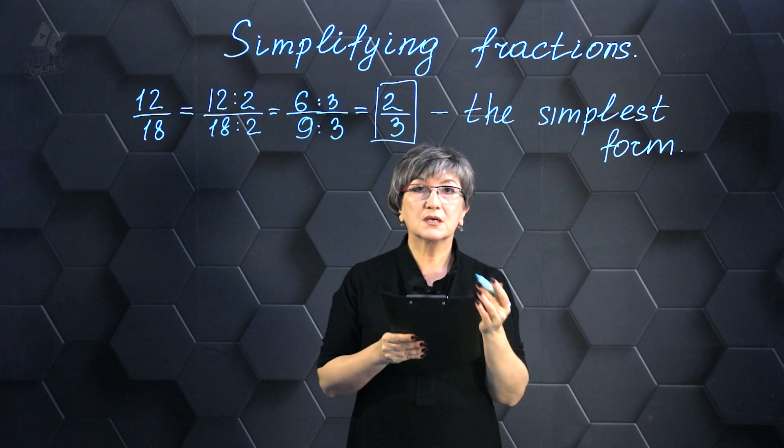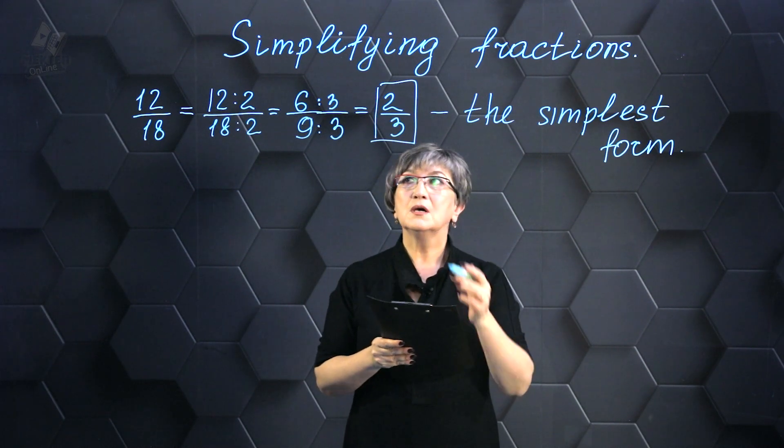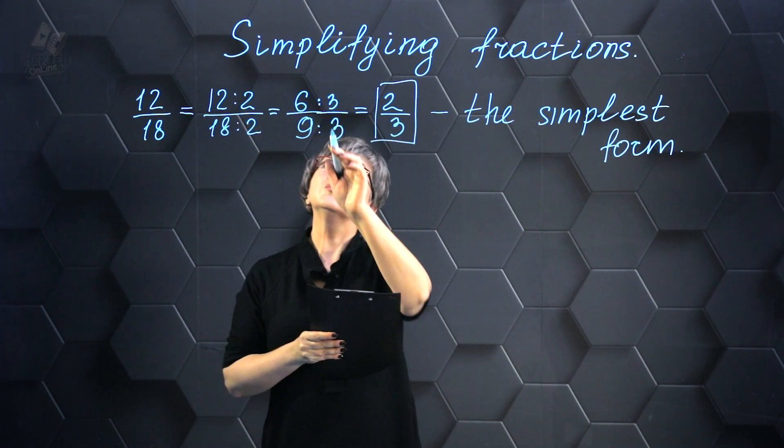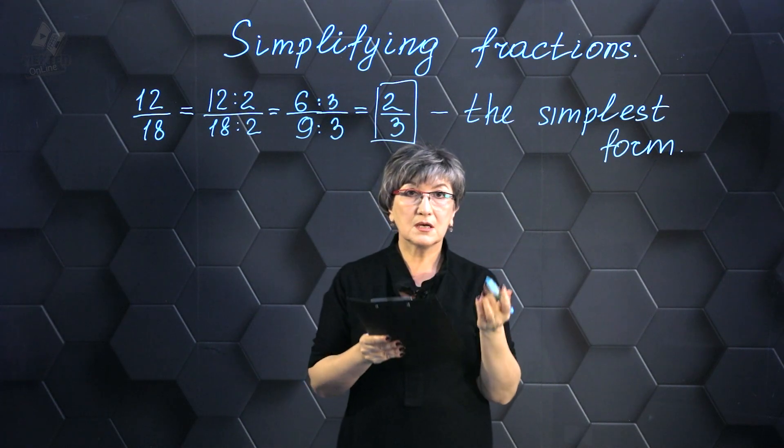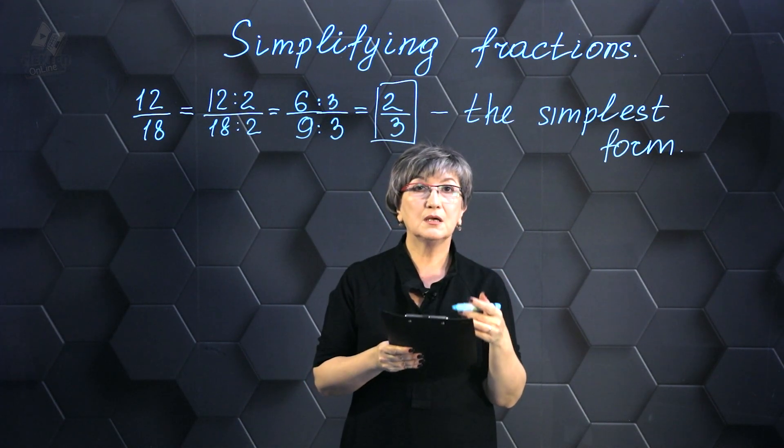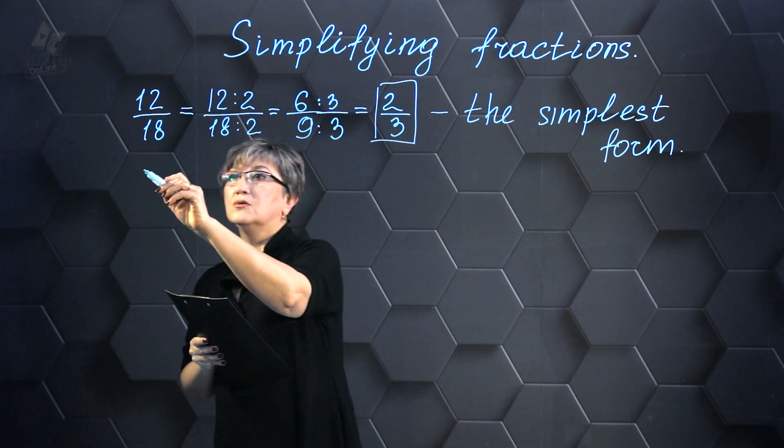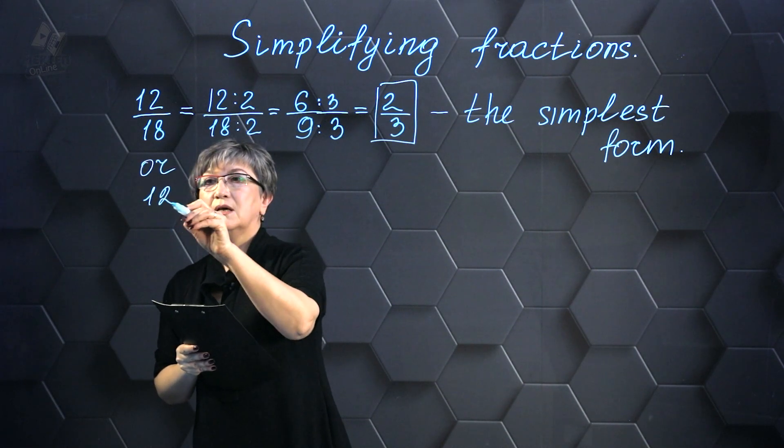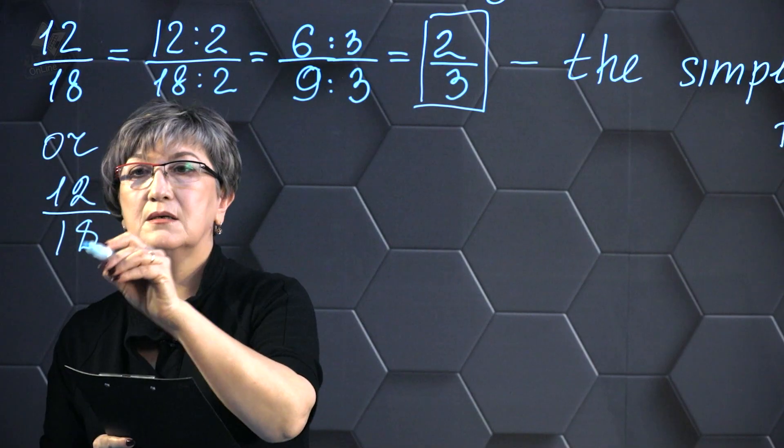Someone among you will shorten it in a slightly different manner. He will not divide it by 2 and then by 3. Someone will divide it by 6 right away. And this will also be true. That is, I can immediately reduce 12/18 by 6.